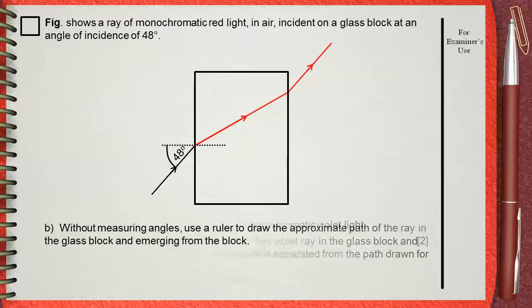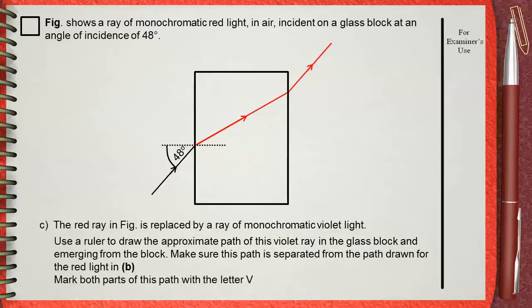Question C. The red ray in figure is replaced by a ray of monochromatic violet light. Use a ruler to draw the approximate path of this violet ray in the glass block.